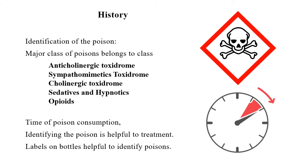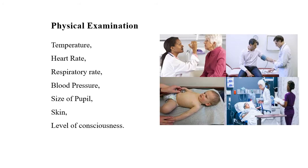From the history of symptoms of that particular poison, we estimate what poison has been absorbed. A simple method is to check the label on the medication bottle. For physical examination, we assess temperature, heart rate, respiratory rate, blood pressure, pupil size, and skin condition — this guides the treatment.